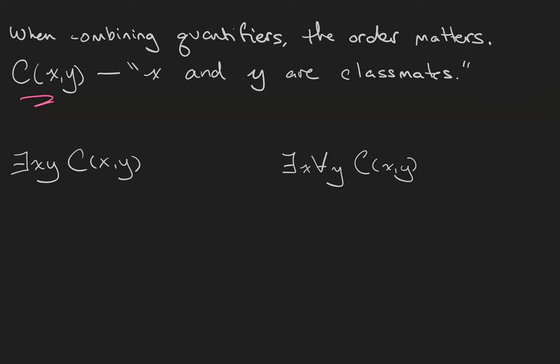So in the first case, let's consider where I have two existential quantifiers. Another way to write this would have been there exists an x such that there exists a y such that C(x,y). But when all of my quantifiers are the same, I like to just use a single quantifier and then all of the variables next to it. What this means is that we have one object called x, and it is being paired, or is classmate with, another object called y. That's all there is to it. One x, one y.